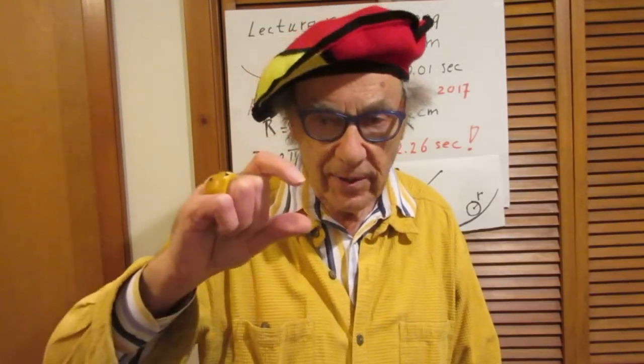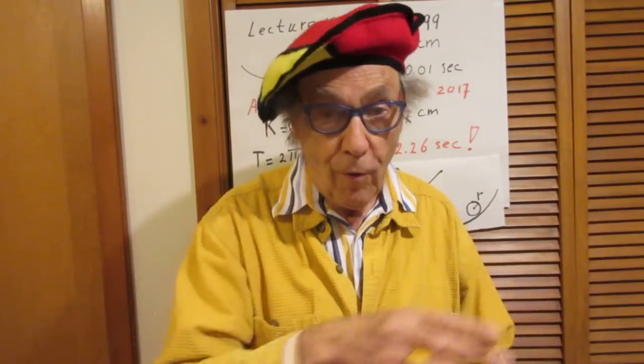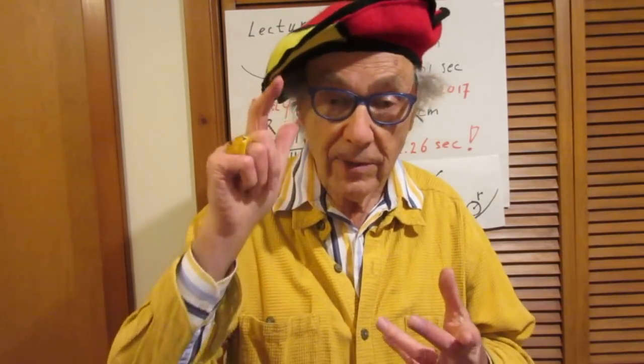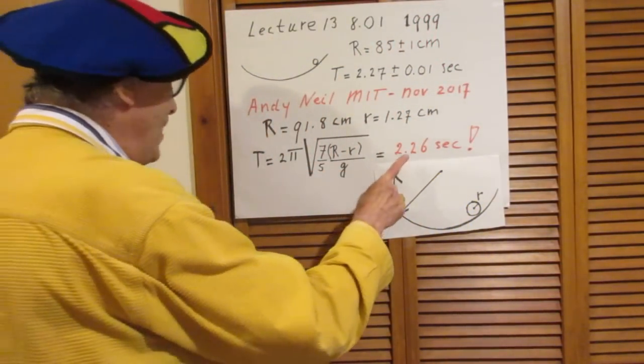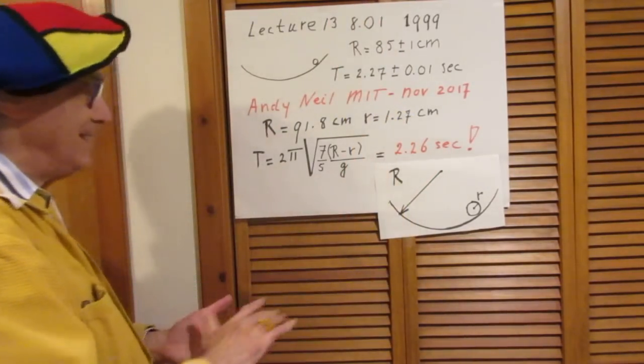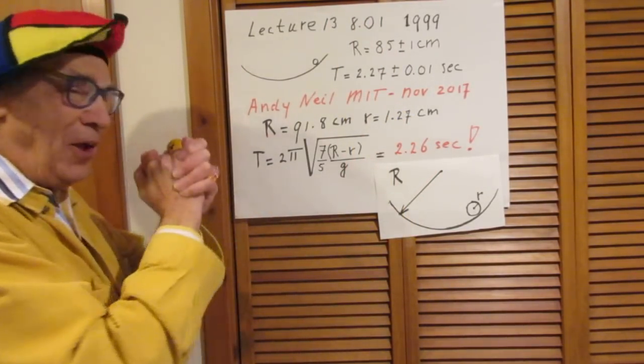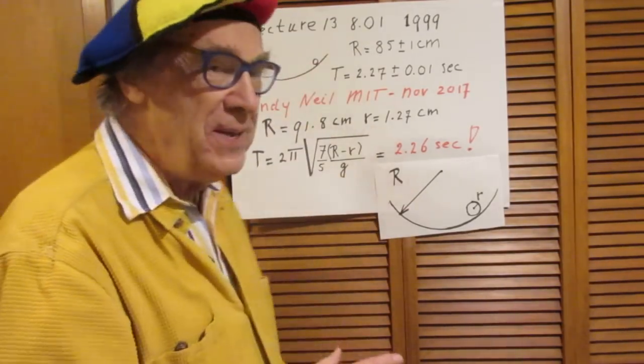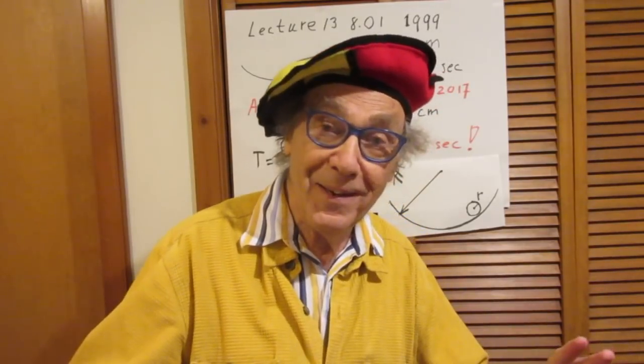I had also asked him what the radius of the rolling ball was, and he said the diameter is 1 inch — 2.54 cm. So then I used the numbers: 91.8 cm for the radius of the track, and I even put in half the diameter as the radius for the rolling sphere. And what did I find? I find 2.26 seconds! Physics works! But it took me 18 years to actually make this check.